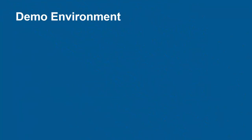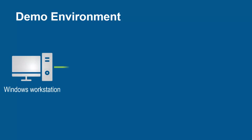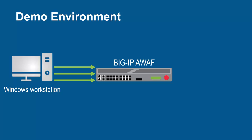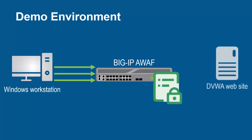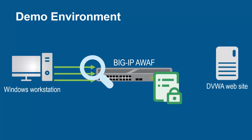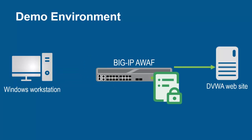The environment for this demo contains three devices. A Windows workstation will be used for sending requests to update the existing security policy. These requests will arrive at the F5 BIG-IP system running Advanced WAF, which already has an Advanced WAF security policy used to protect the backend web application. The BIG-IP system, using its full proxy architecture, examines every request before sending them to the backend web server.